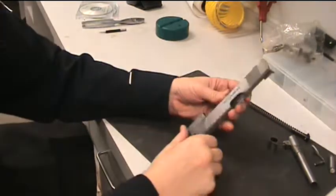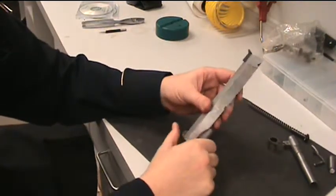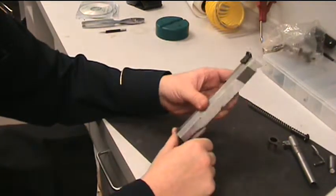Okay, next thing we're going to do is a field strip or disassembly on the upper receiver, the slide.